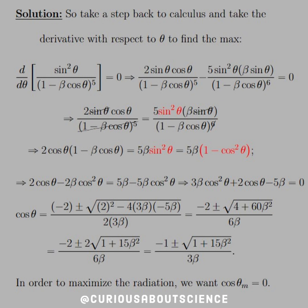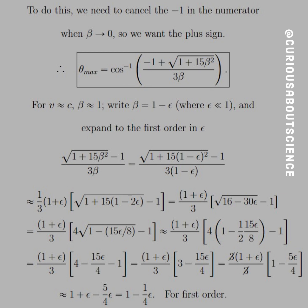Simplify this to the best of your ability. And so what we need to do now is that in order to maximize the radiation, we want where cosine theta equals 0. Recall that the formula for the power radiated had 1 minus beta cosine in the denominator. So if cosine theta goes to 0, then we have the smallest possible denominator.